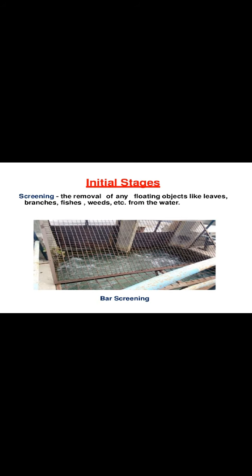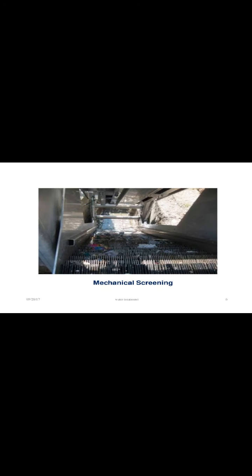The stages of water treatment at the plant are: first, screening — the removal of any floating objects like leaves, branches, fish, and weeds from the water. Then mechanical screening removes remaining particles not removed by coarse screening.